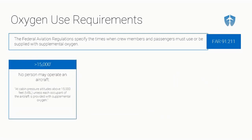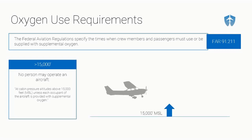The third rule: above 15,000 feet MSL, no person may operate an aircraft unless each occupant of the aircraft is provided with supplemental oxygen. Now we're not just talking about the flight crew — we're talking about passengers too. They must be at least provided the opportunity to don and use supplemental oxygen. However, they don't actually have to use it; if they decline, that's okay. But they must be provided that opportunity above 15,000 feet.